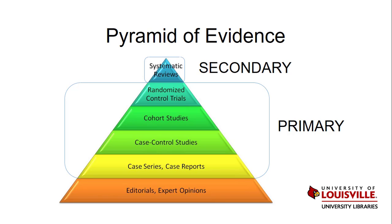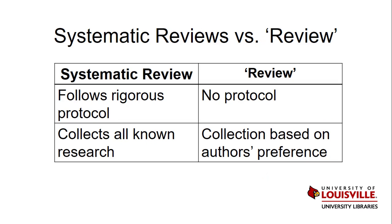If you come across a review from the Cochrane Library or an article that states it used the Cochrane Protocol, you can be guaranteed you will be getting top-level evidence. It is important to recognize the difference between a systematic review and a simple literature review. As you search the literature, you will find many articles labeled simply as reviews or review of literature.